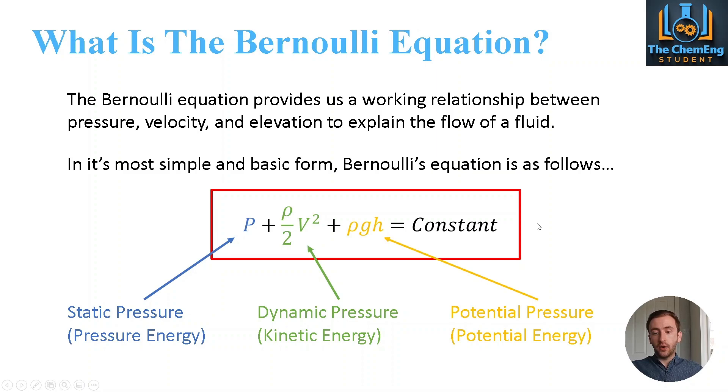The third term is our potential pressure and this is based on the idea of a difference between the starting point and the end point that we are interested in in terms of the elevation. Now here it can be referred to as H but it can also be referred to as Z. So we have our density, we have a gravitational constant because if we were going say up a distance then gravity would be trying to pull us down and then we would multiply that by the height or the elevation difference between the starting point and the end point. And we deem this potential energy or potential pressure as well.